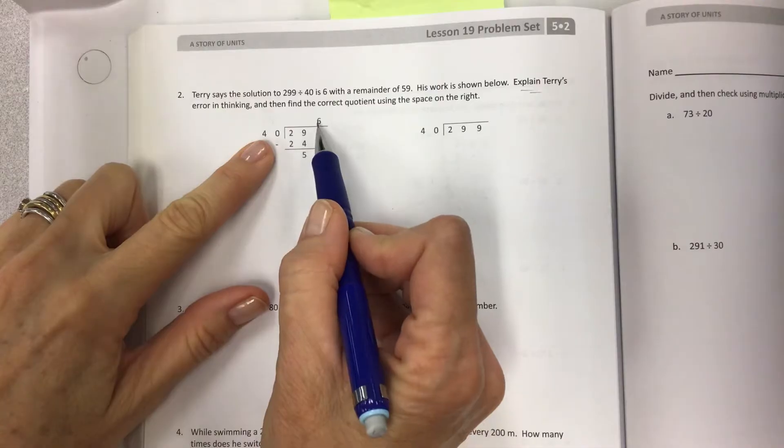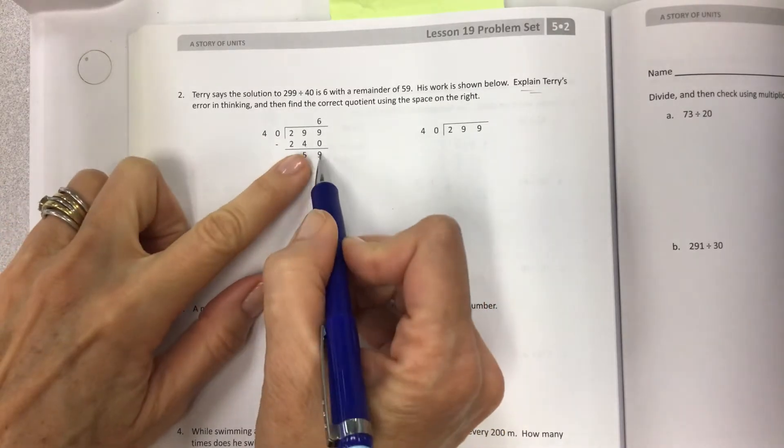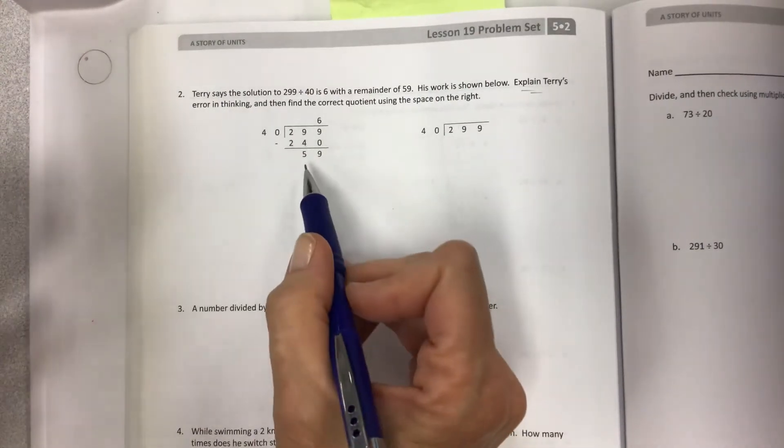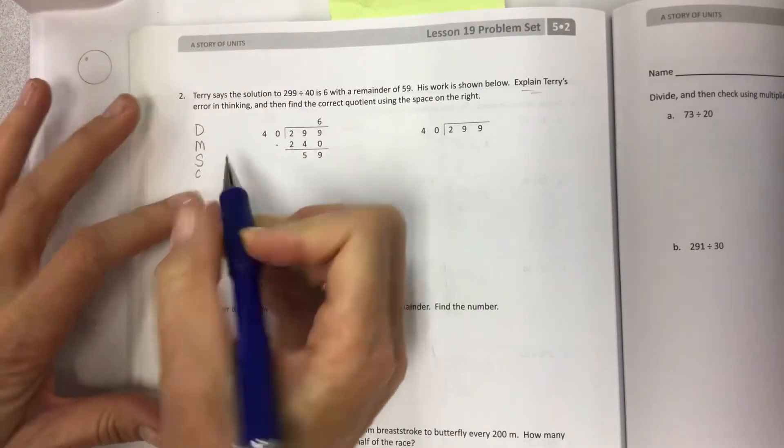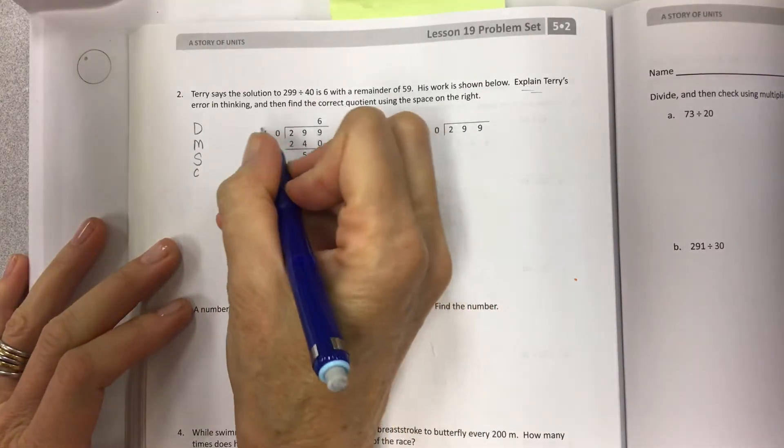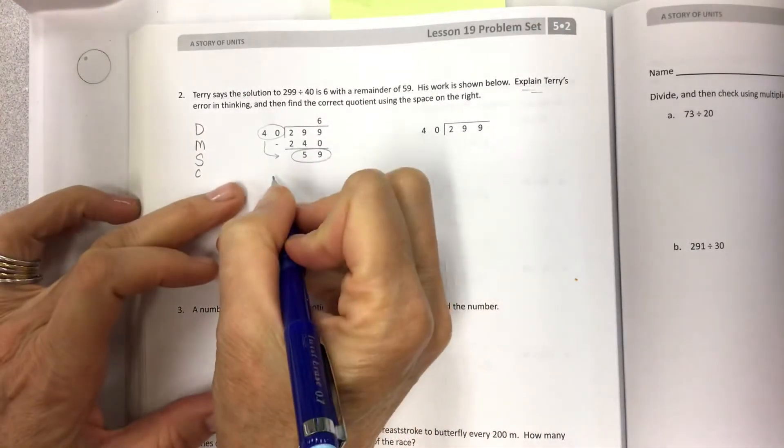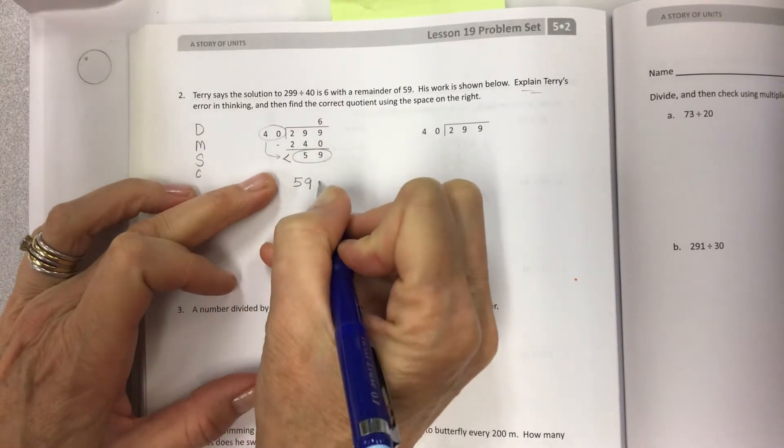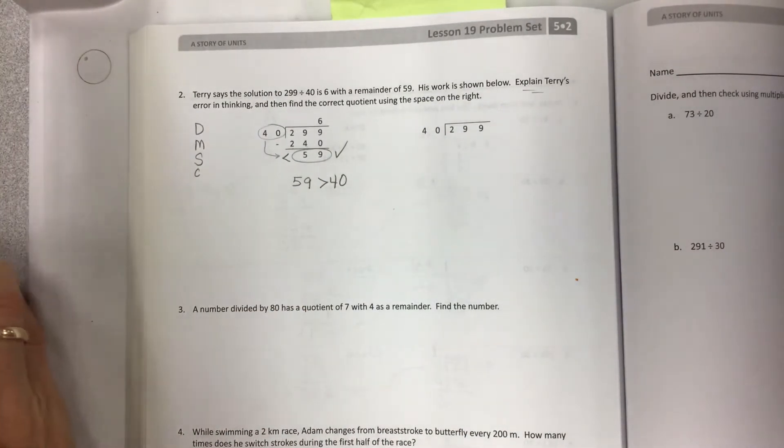So you might say 6. If he puts 6 here, 6 times 0 is 0. 6 times 4 is 24. This is all correct. And then you do your subtraction. That's right too. My gosh, what's happening here? I don't understand. And I would say if you've done your division, multiplication, subtraction, then we would be at the compare. And right here, what's that? And what's that? Now here, the problem is that this is greater. 59 is greater than 40.